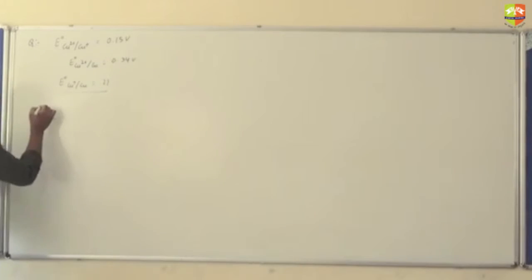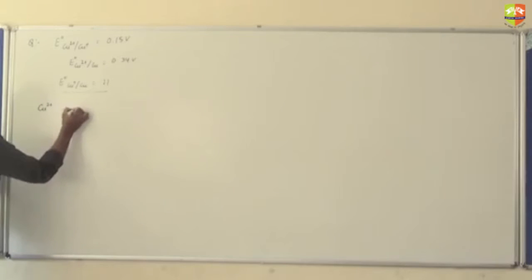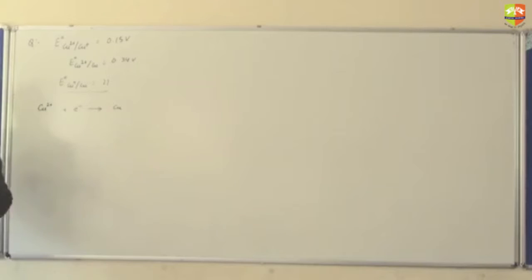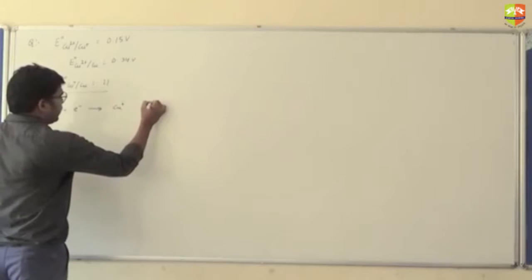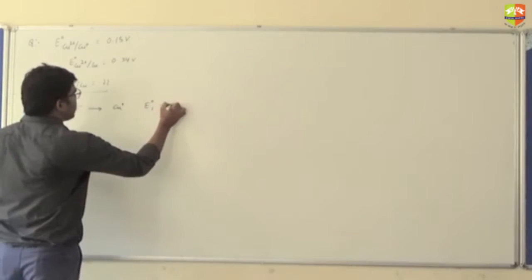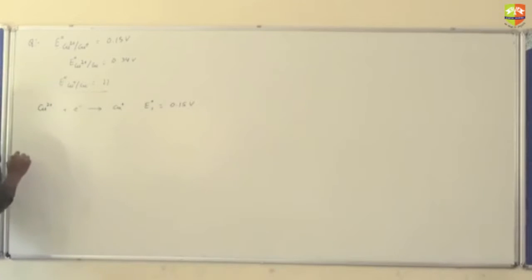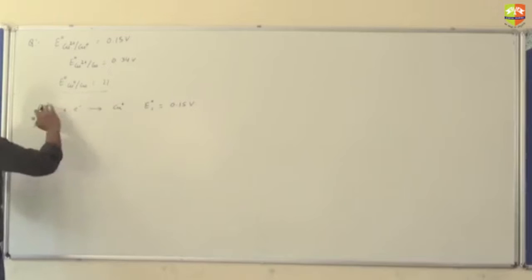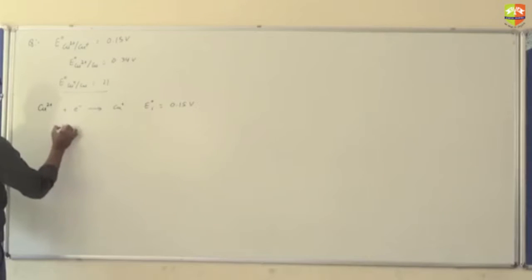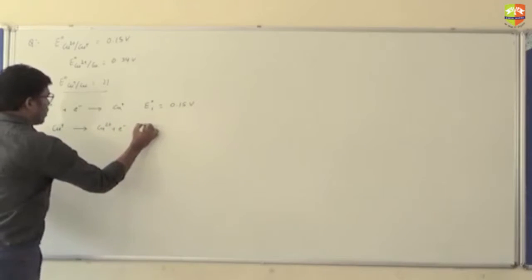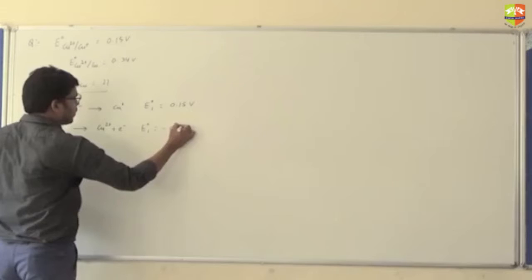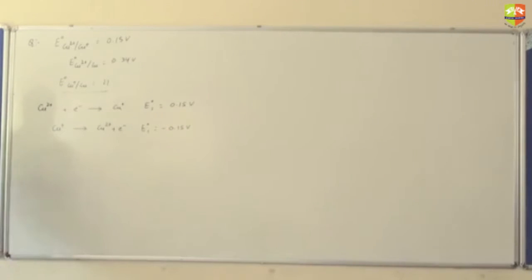The first reaction is Cu²⁺ + 1 electron → Cu⁺, and E°₁ is given as 0.15 volt. Since Cu⁺ should be on the reactant side, we reverse this reaction: Cu⁺ → Cu²⁺ + 1 electron, so E°₁ becomes −0.15 volt. This is the first reaction.